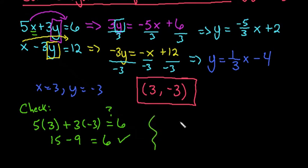If we check the second one, we would simply replace this x with 3 and this y with negative 3. And we would see if this also gives us a true statement. Remember, you always multiply before subtracting. So negative 3 times negative 3 is positive 9, and 3 plus 9 does give us 12. So we can see that this works.